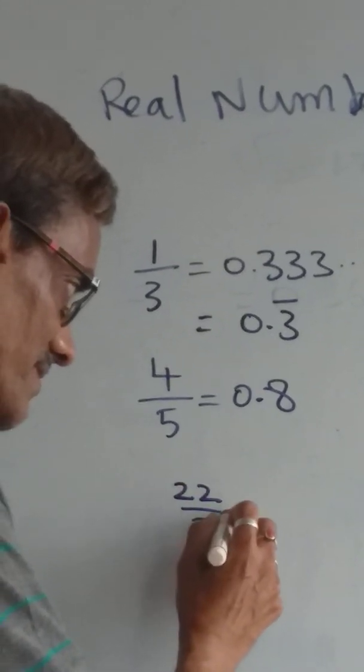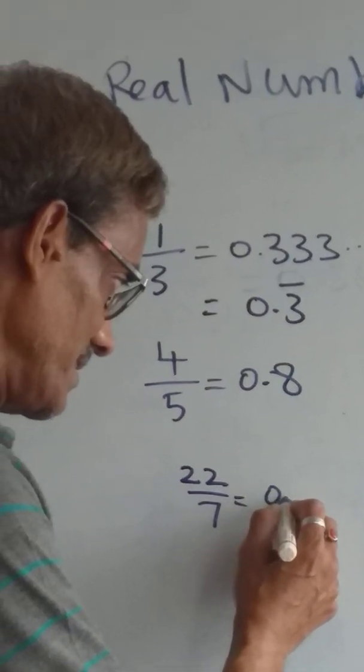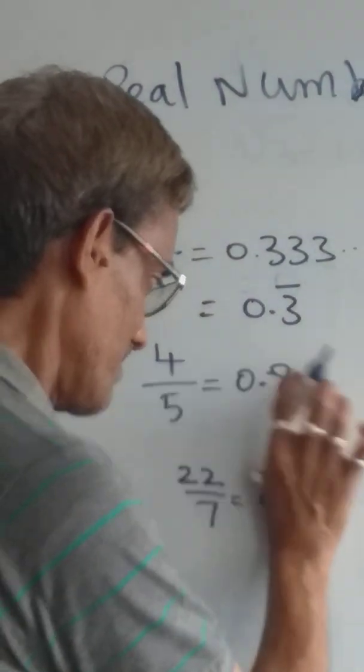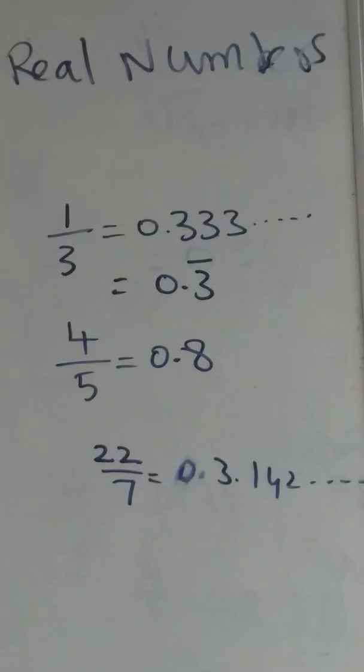Another example: 22 by 7. If I divide this, then I will get 3.142... The number keeps on going.